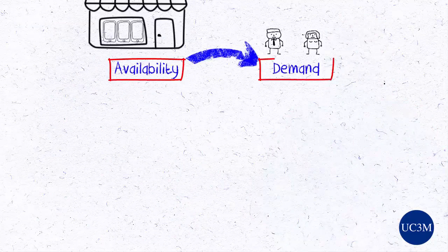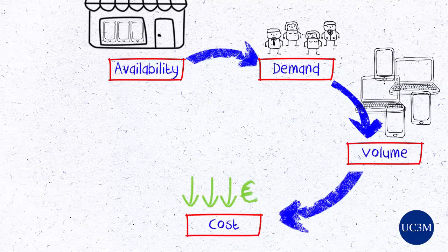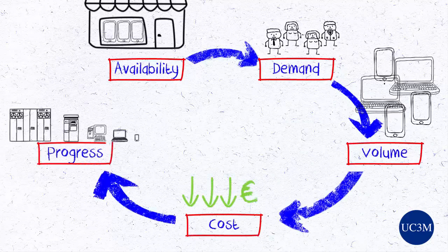This has led to a virtuous circle, whereby availability breeds demand, and this demand leads to higher volumes, which in turn drive costs further down and fuel technological progress.